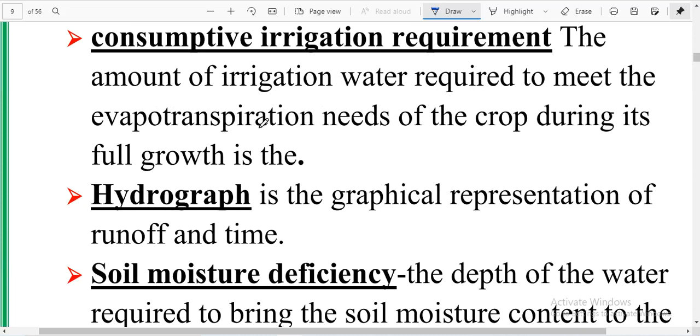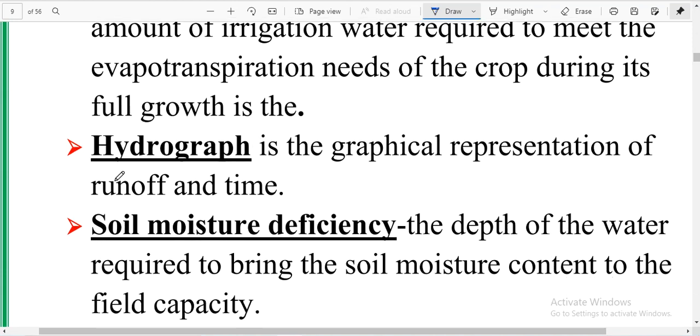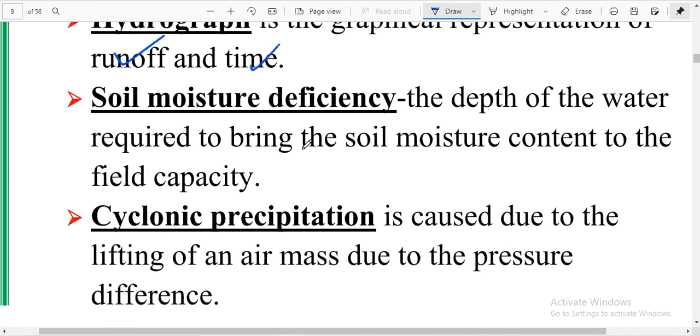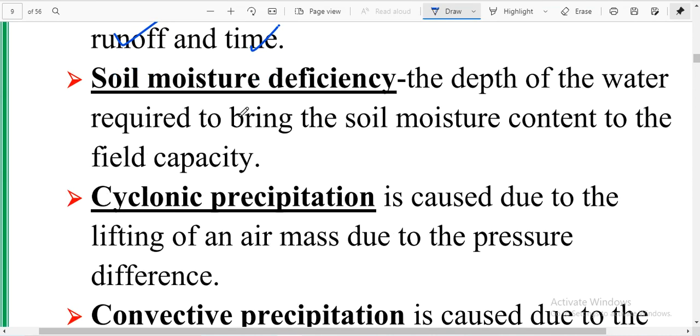Hydrograph is the graph between runoff versus time. Hydrograph is basically discharge versus time. Soil moisture deficiency is the depth of the water required to bring the soil moisture content to the field capacity.